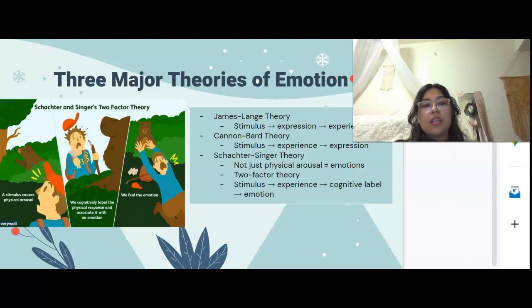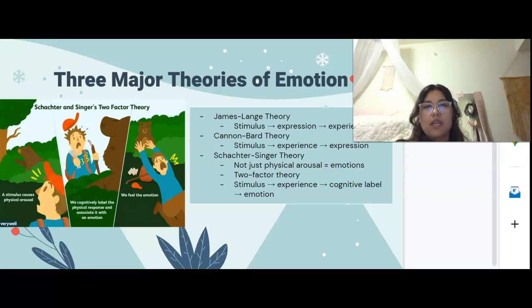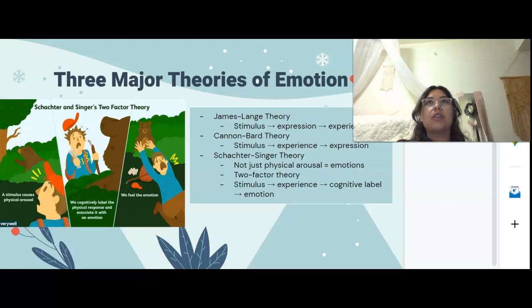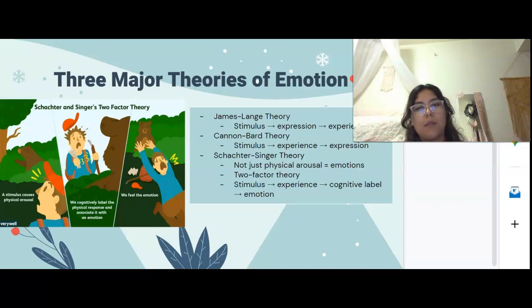Then we have the Schachter-Singer theory, where a stimulus causes an experience, you cognitively label that experience as a certain emotion, and then you have that emotion. For example, if you have a final exam as your stimulus, you feel your heart racing and your hands trembling, and you label that as stress — you feel that emotion and say, I am experiencing stress, because you labeled it. Merleau-Ponty's theory aligns more with the Schachter-Singer, which combines the James-Lange and the Cannon-Bard theories.